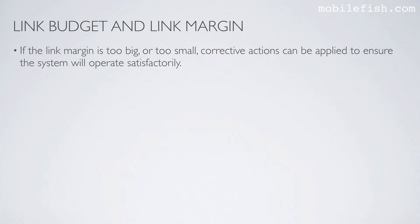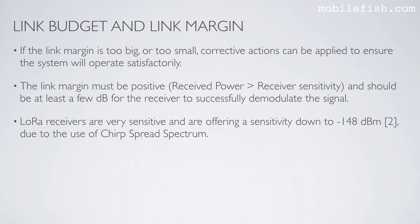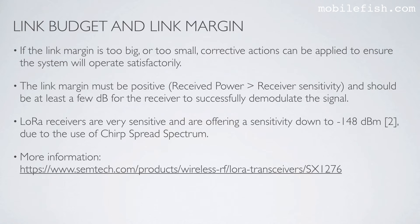If the link margin is too big or too small, corrective actions can be applied to ensure the system will operate satisfactorily. The link margin must be positive — the received power must be greater than the receiver sensitivity and should be at least a few decibels for the receiver to successfully demodulate the signal. LoRa receivers are very sensitive and offer a sensitivity down to minus 148 dBm due to the use of chirp spread spectrum. I will explain chirp spread spectrum in a later video. More information can be found at the link provided.